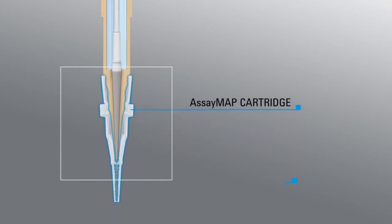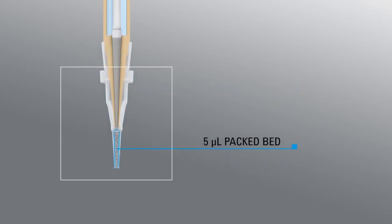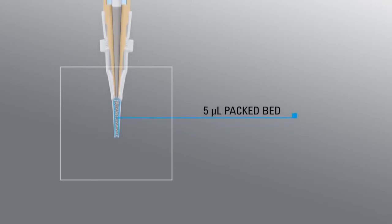The AssayMap cartridge features a 5 µL packed bed resin that can be of various materials, including common chromatographic supports and immobilized enzyme, antibody, or other ligands such as protein A or streptavidin.